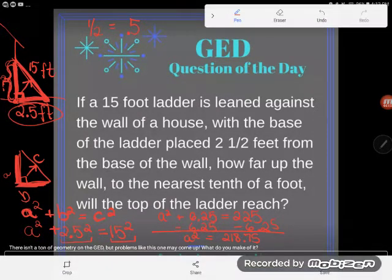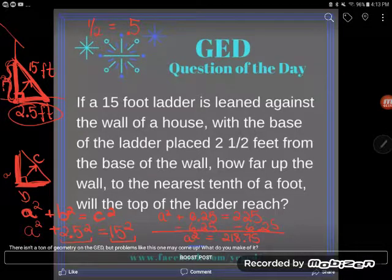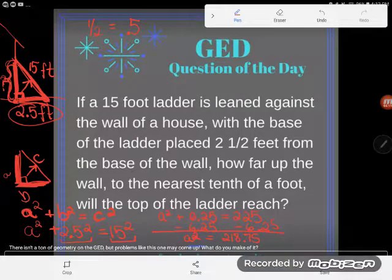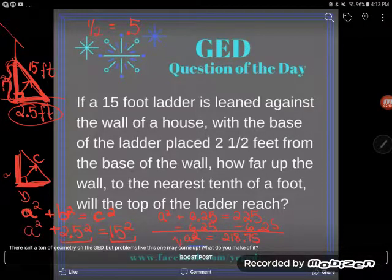Now this problem is almost solved. The letter is almost by itself, but notice A isn't quite alone. It still has this little square hanging out, this little floating two. In order to get rid of a square, you have to do the opposite of square. The opposite of square is square root.